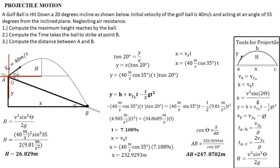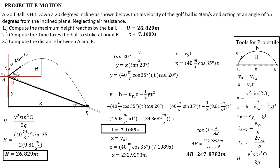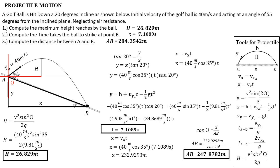So I think we've solved everything. Let's recap: the maximum height reached by the ball is 26.829 meters; the distance AB is 247.8782 meters. That's all for today's topic. I hope you enjoyed watching and that this gives you an idea for this kind of problem. Don't forget to subscribe and hit the bell button for new engineering tutorial videos. Thank you and keep safe, everyone.